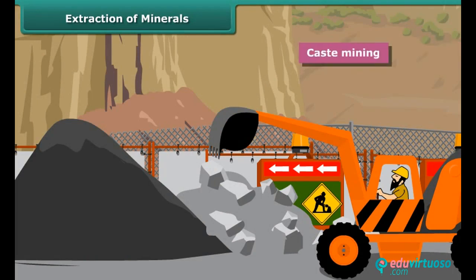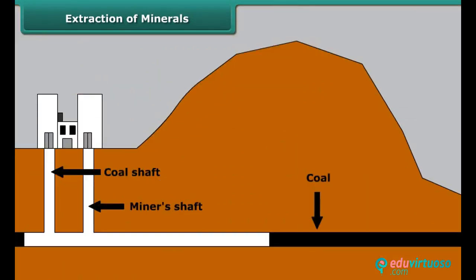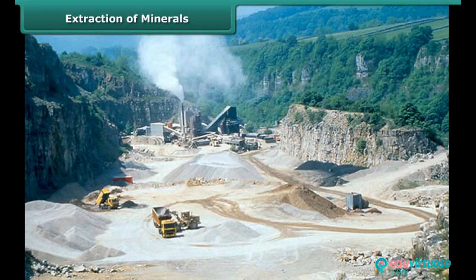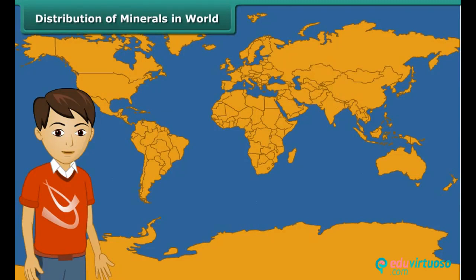Removing the surface layer to extract minerals is known as open cast mining. Deep bores called shafts are used to take out mineral deposits that lie at great depths — this is called shaft mining. Petroleum and natural gas occur far below the earth's surface, so deep wells are drilled to take them out, which is called drilling. Minerals that lie near the surface are simply dug out by a process known as quarrying.